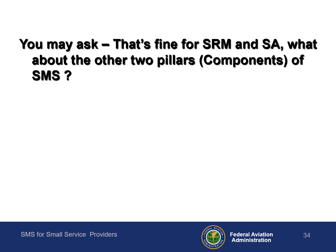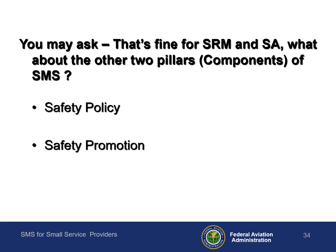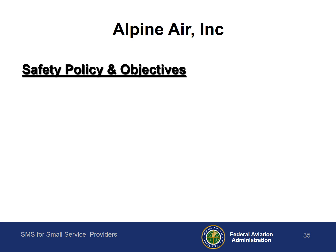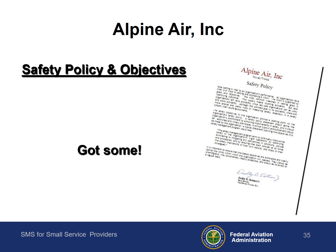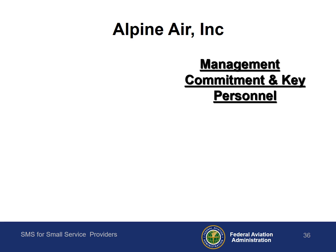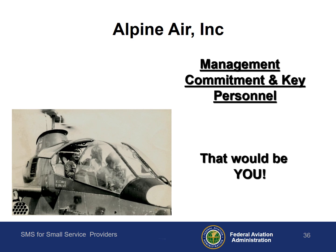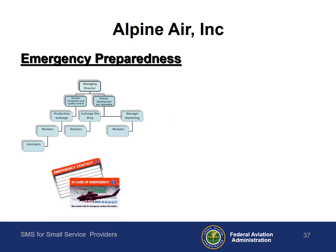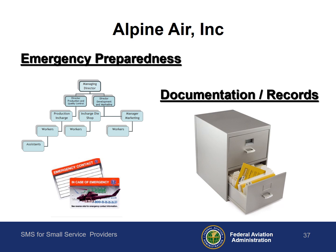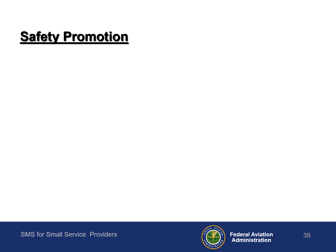You now have safety risk management and safety assurance well covered. So what about the other two components of your SMS? Safety policy and safety promotion. Safety policy and objectives — you've had that in the front of your reading file since you set up your SMS and you review it periodically. Management commitment and key personnel? That's easy — it's you. Emergency preparedness? You've got a company emergency call roster and everyone has their pocket in case of emergency card. Documentation and records? Got it. Safety promotion? You do that.